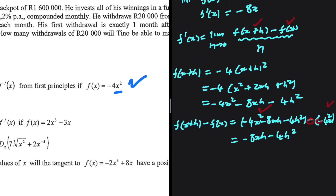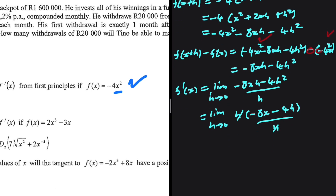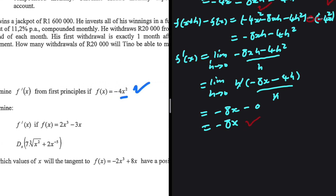Substituting back, f prime of x equals the limit as h tends to 0 of minus 8xh minus 4h squared, everything divided by h. Taking h as a common factor in the numerator we get h multiplied by minus 8x minus 4h, divided by h. The h's cancel and letting h tend to 0 we get minus 8x minus 0, so f prime of x equals minus 8x — the same answer from the power rule. So 7.1 is correct, all 5 marks.